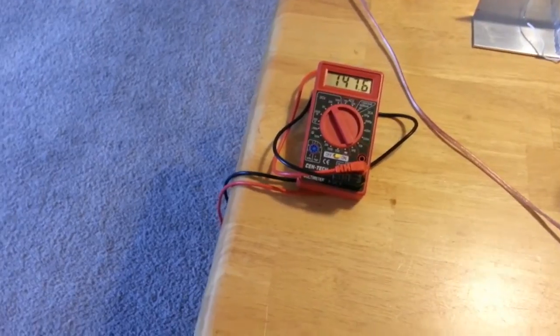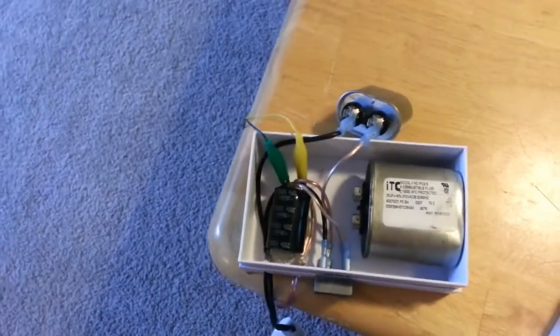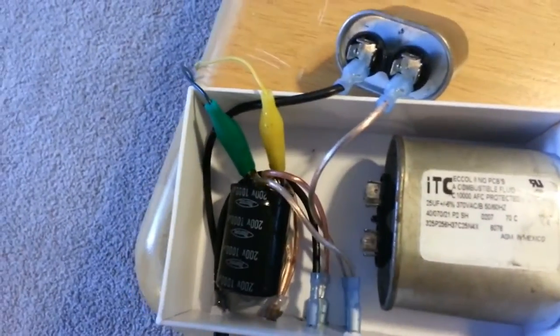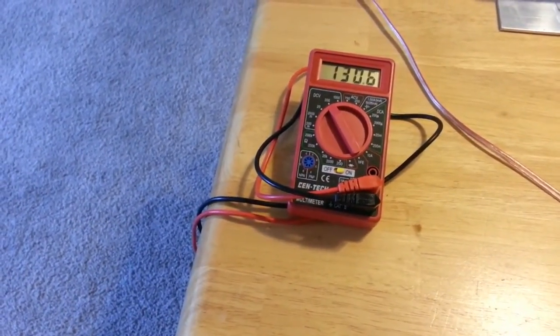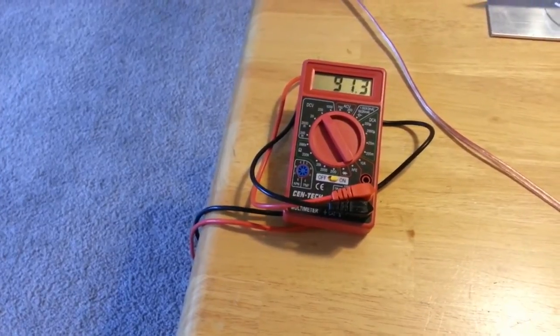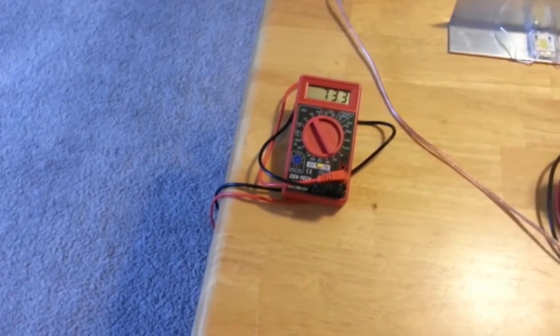So since I have this 1 megaohm resistor over this capacitor, when I turn the circuit off, it won't stay at 140 volts, it will drain back down to zero for safety reasons.